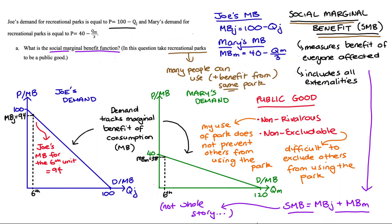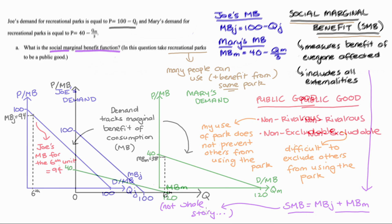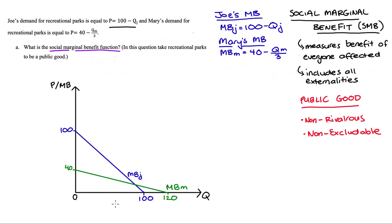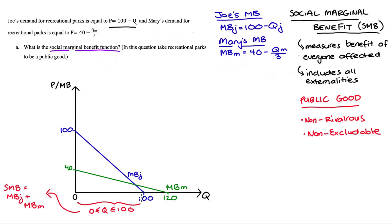Let's look at these marginal benefit curves redrawn on the same axis — Joe's in blue and Mary's in green. For quantities from 0 to 100 inclusive, both Joe and Mary have marginal benefit associated with those units. Looking at the height of the marginal benefit curves at each quantity, both Joe and Mary get marginal benefit from all these units. So over these quantities, our social marginal benefit function will be equal to the sum of Joe and Mary's marginal benefit curves. I'm including Q = 100 because technically Joe's marginal benefit is exactly zero at that point, but it is still part of his domain.